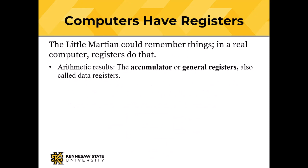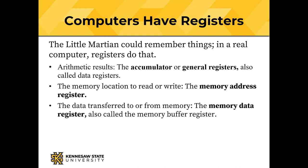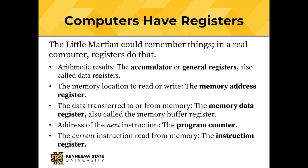Real computers have registers. In real computers, arithmetic results are stored in the accumulator or in general registers. General registers are also called data registers. The memory location to read or write is held in the memory address register. Data transferred to or from memory is held in the memory data register, also called the memory buffer register. The address of the next instruction is held in the program counter, and the current instruction read from memory is held in the instruction register.